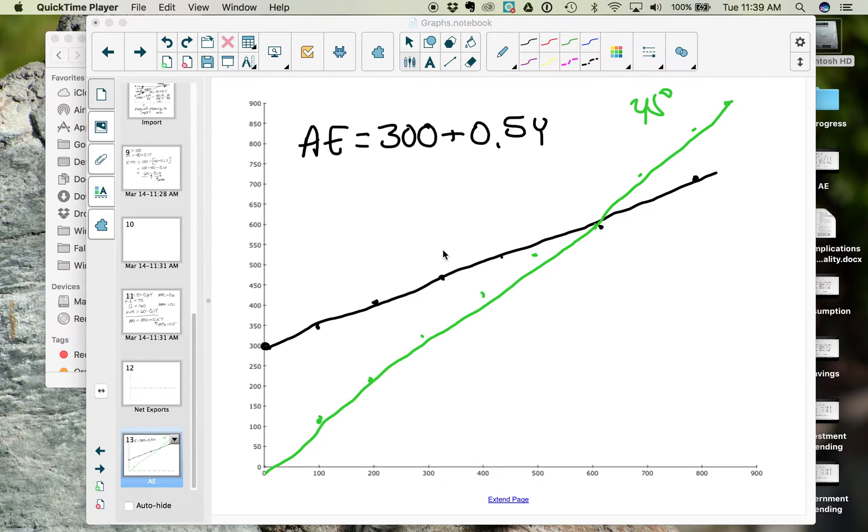Now that we have our aggregate expenditure function and we've plotted the 45 degree line to see how big our economy is, we can now look at what happens to the size of the economy when there is a change in total spending.